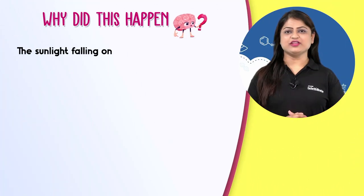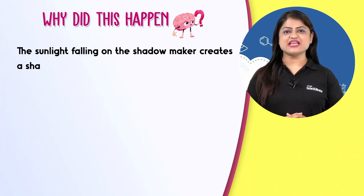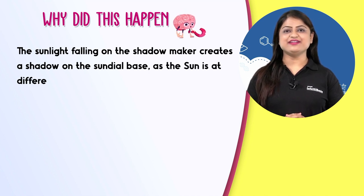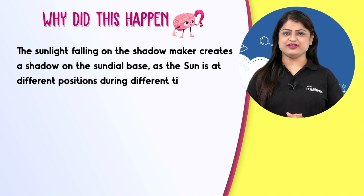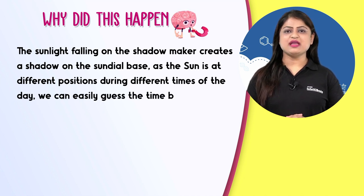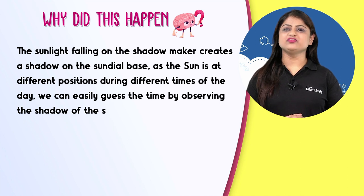The sunlight falling on the shadow maker creates a shadow on the sundial base. As the sun is at different positions during different times of the day, we can easily guess the time by observing the shadow of the shadow maker.